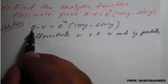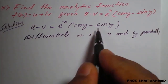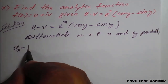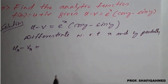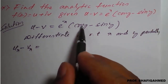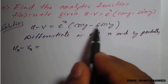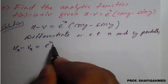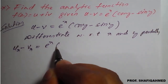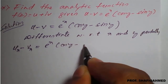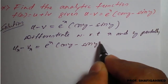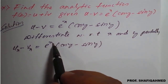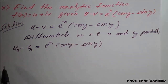First we differentiate with respect to x. If you differentiate with respect to x partially, u becomes u_x and v becomes v_x, equal to the right hand side. The bracket term cos y minus sin y is purely constant, so the differentiation of e raised to x is e raised to x, giving us: u_x minus v_x = e raised to x into cos y minus sin y. This is equation 1.